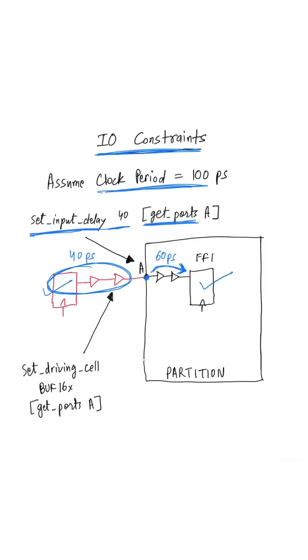The second constraint which we want to set on all the input ports in our design is the set driving cell constraint. Basically, for all the input ports in our design, we want to have a good estimate of what kind of cell will be driving this port A from outside the partition.